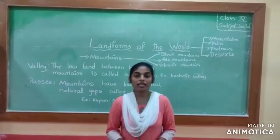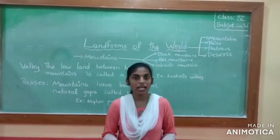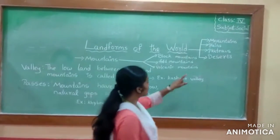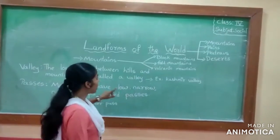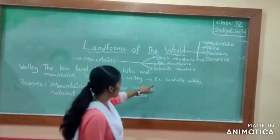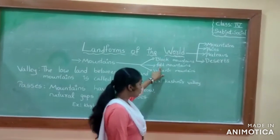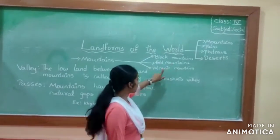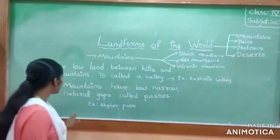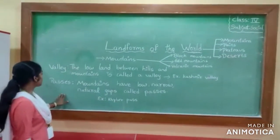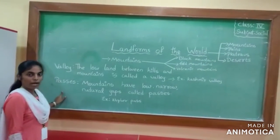Very good morning children. In the last class we discussed about the landforms of the world — specifically mountains, including block mountains, how block mountains are formed, fold mountains, how fold mountains are formed, and volcanic mountains. In today's class we are going to discuss two topics: valleys and passes.